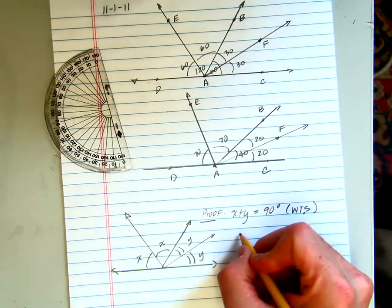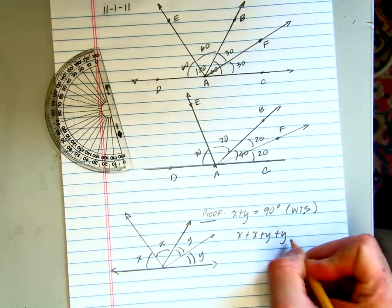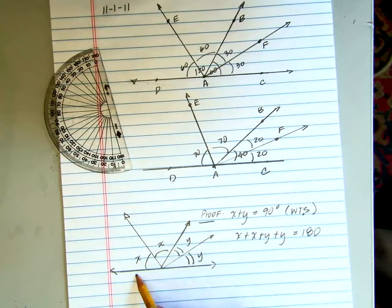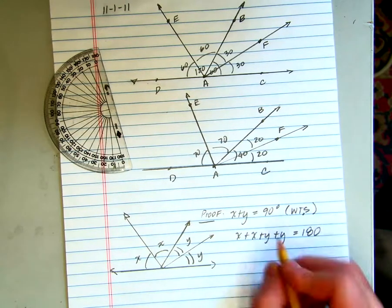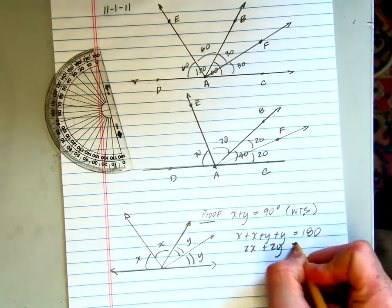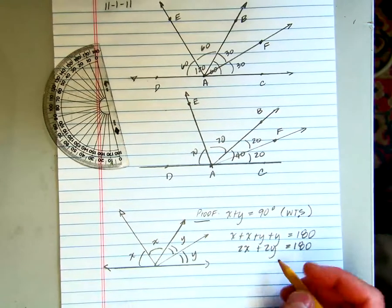The first thing we can see is that x plus x plus y plus y has to be equal to 180 degrees because, of course, we have a straight angle here. So 2x plus 2y has to be 180. Using combining like terms, we get 2x plus 2y has to be equal to 180, and now I can kind of see where I want to go.